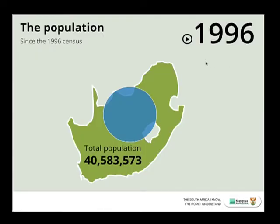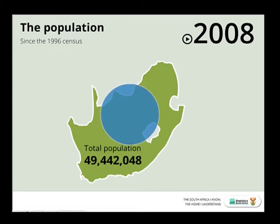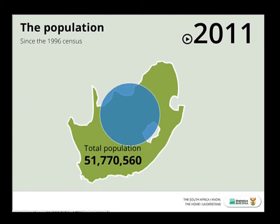Mr. President, that's the context of South Africa. What has happened in the census: here is where we were in 1996, 40.5 million. It has been growing — deaths were carrying, migrants coming in, the numbers increasing. 2008, 2011, we have 51.8 million people in South Africa.